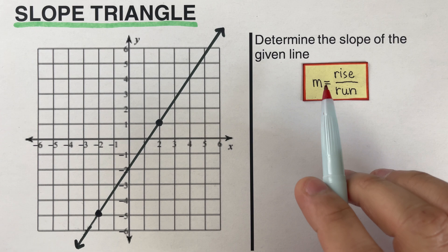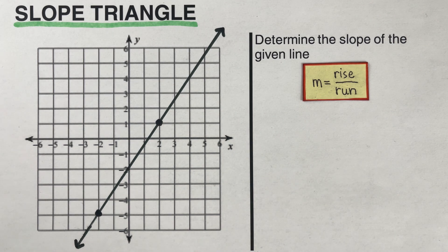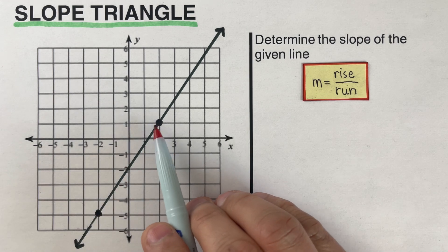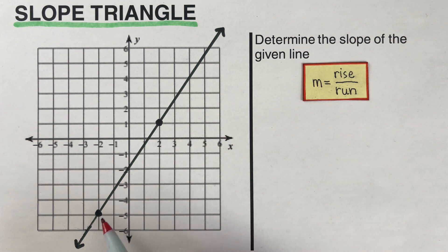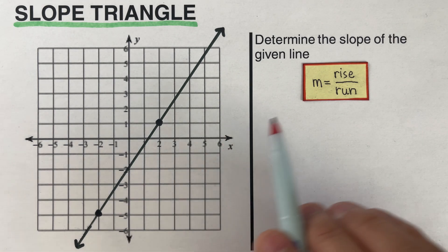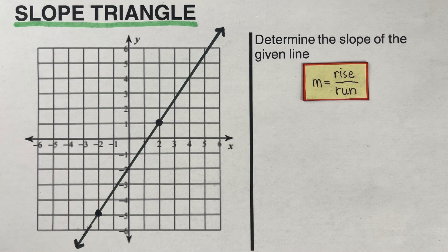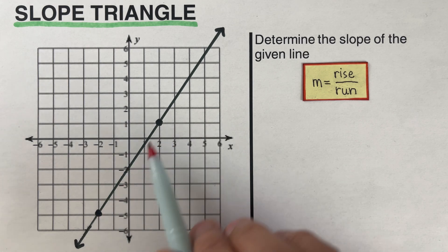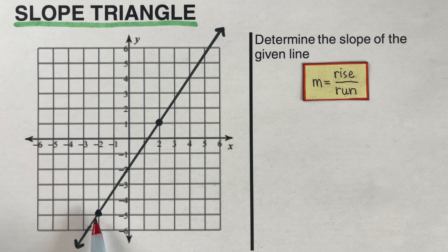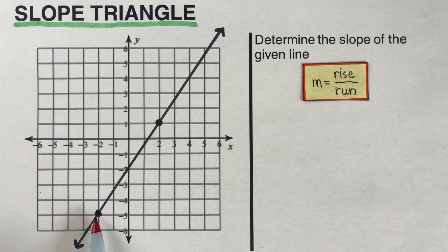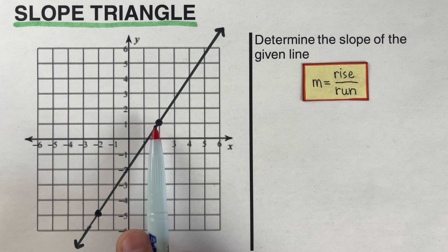To better understand this formula, let's have this example. We are given a line and two points, and we're supposed to determine the slope of this line. The formula for slope is rise over run. Here's a trick: if you are given two points, you have to pick the lower point. Comparing these two points, the lower point is this one right here, and we are supposed to create a triangle.